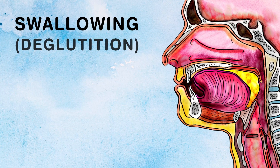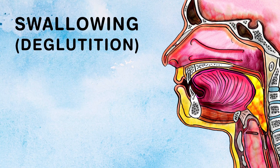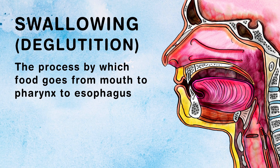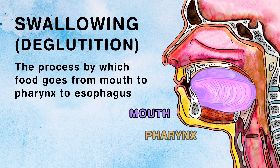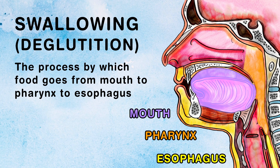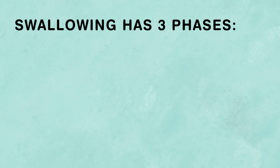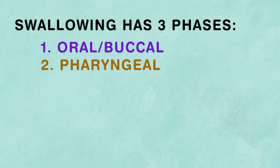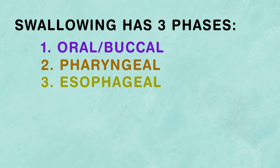Swallowing, also known as deglutition, is the name for the process by which food goes from mouth to pharynx to esophagus. Swallowing has three phases: the oral or buccal phase, the pharyngeal phase, and the esophageal phase.